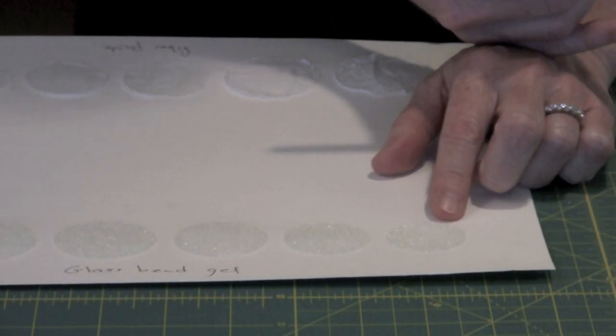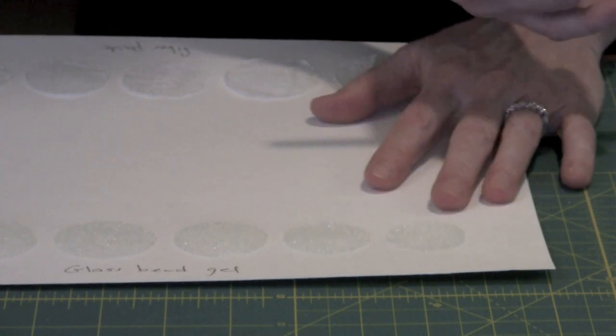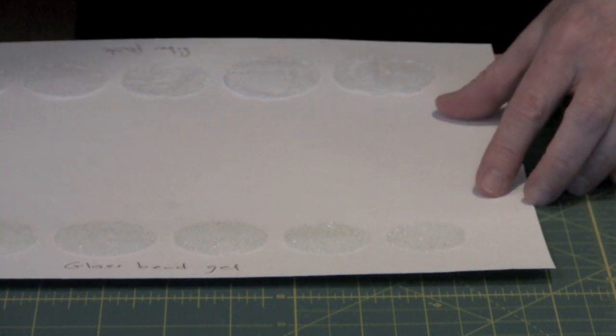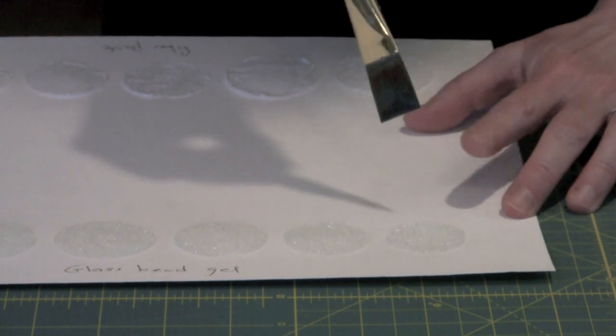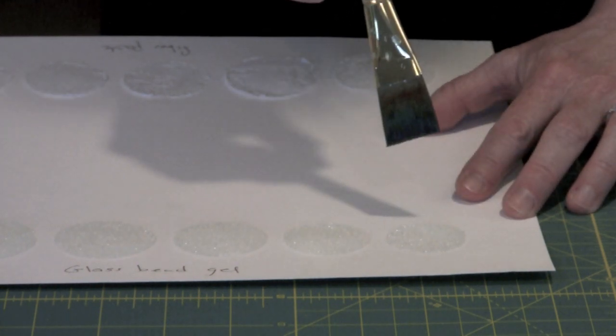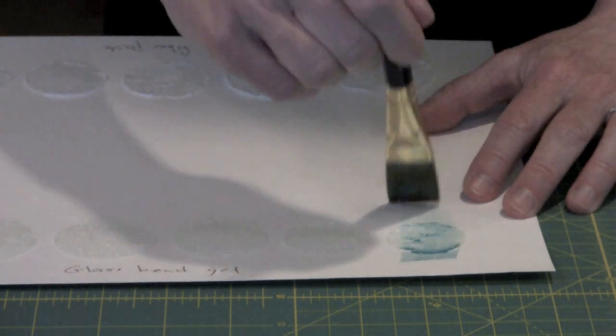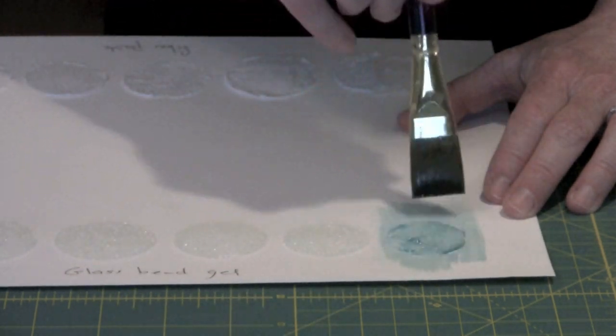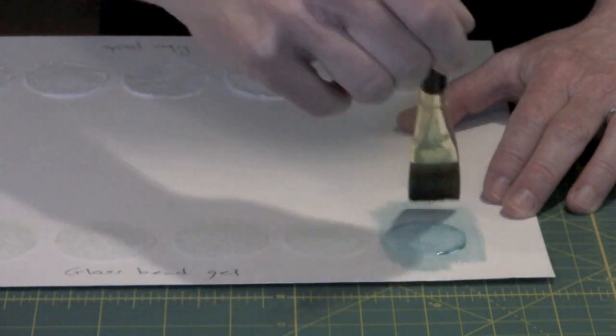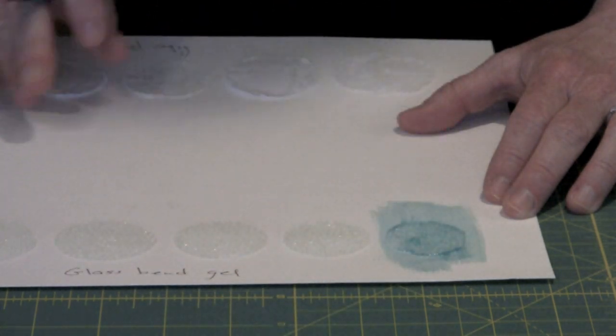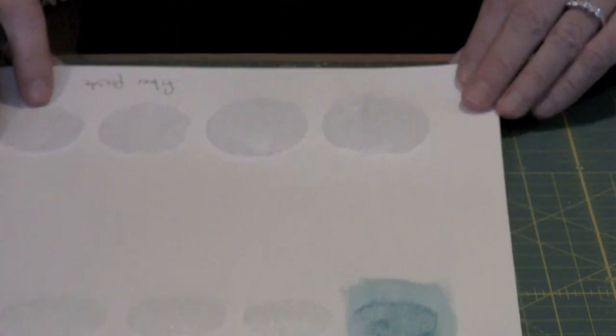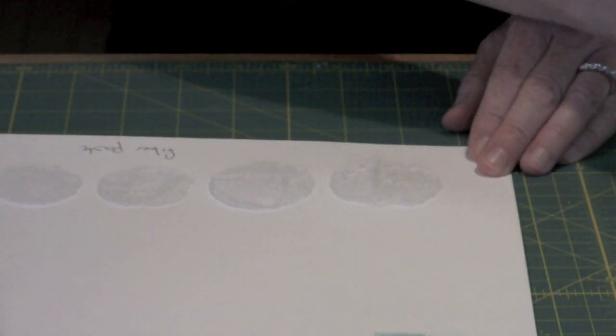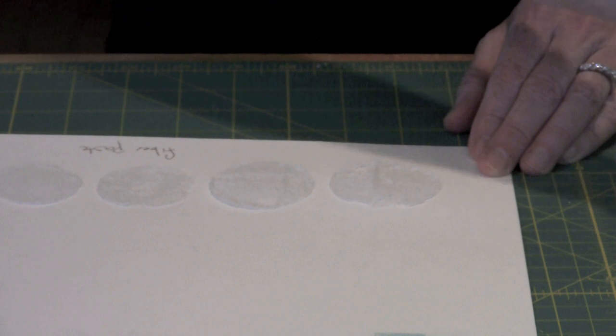This is glass bead gel also by Golden. I have bead gel and fiber paste and I'm going to try the same thing. I have the same wash of cobalt turquoise paint and I'm just going to brush this over here. Interestingly enough the glass beads will not pick up any of the paint themselves, but you can certainly see the texture as the paint falls down in among the beads.